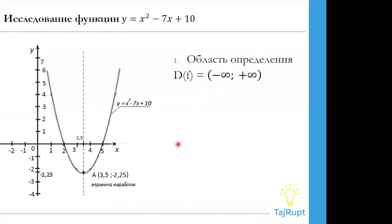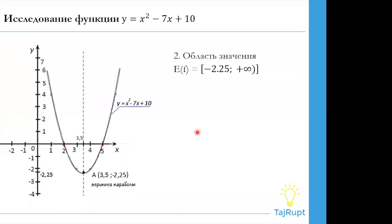Здесь начнем с области определения. Область определения — это все значения, которые может принять x. То есть мы видим промежуток от минуса бесконечности до плюса бесконечности, то есть x может быть абсолютно любым числом. Другой компонент — это область значения. Область значения — это все значения, которые может принять y. На графике мы видим, что область значения начинается от минус 2,25, причем эта точка входит в область значения, и две ветви продолжаются до плюса бесконечности.